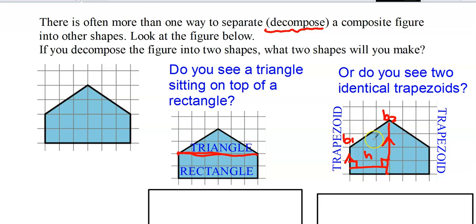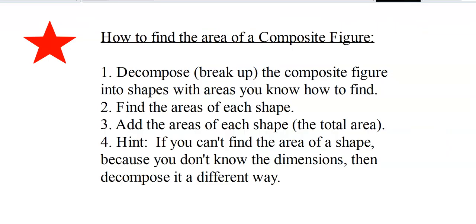So maybe I could do this formula a little differently: instead of dividing in half, I could just add the two bases times the height. Since there are two identical halves, you can see that you can be creative in how you want to break up shapes and find the composite area.